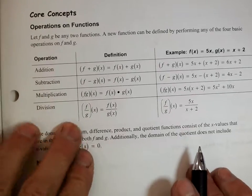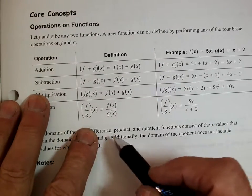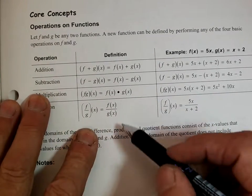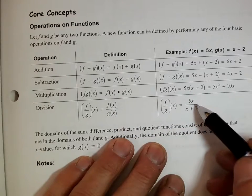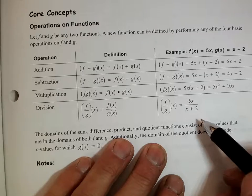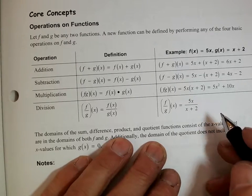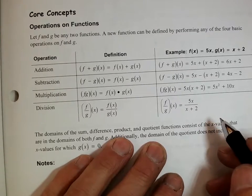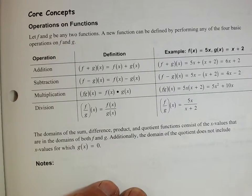And finally on division, they show it as F divided by G. So we take 5X over X plus 2. If I could simplify it I would, but I can't reduce or simplify, so that's just the answer.